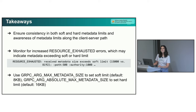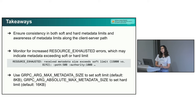An audience member noted that in their stack it's hard to observe the current metadata size — it's not wired through to the stream tracers, making it difficult to track metrics. They'd like to know the metadata size even before hitting the soft limit. In response, we definitely have plans to add observability for metadata sizes on the path. Currently we do some debug logging, but we don't have any tracing per se right now.